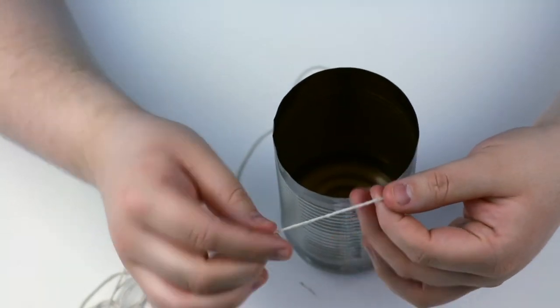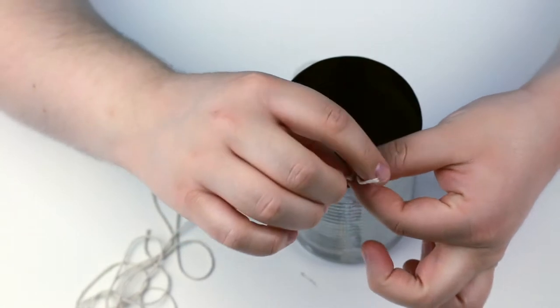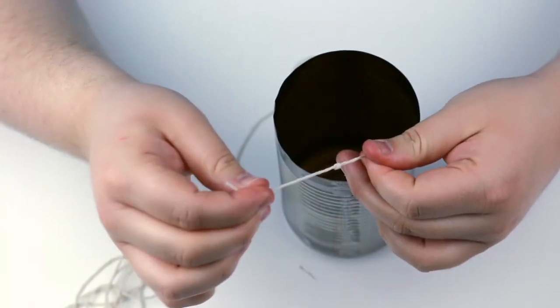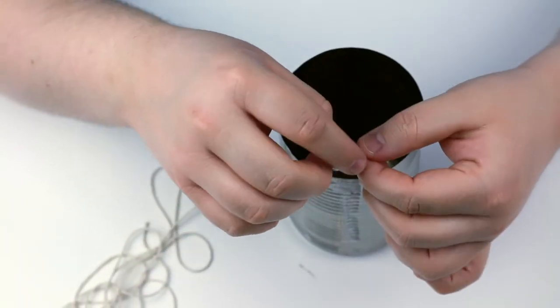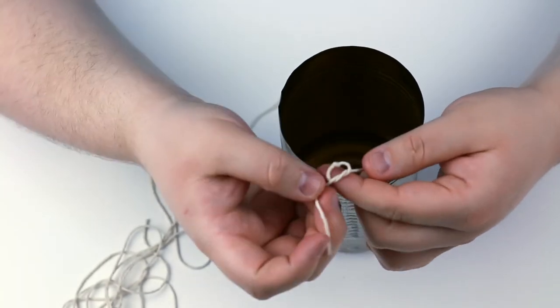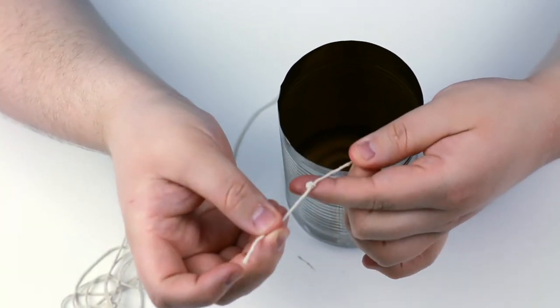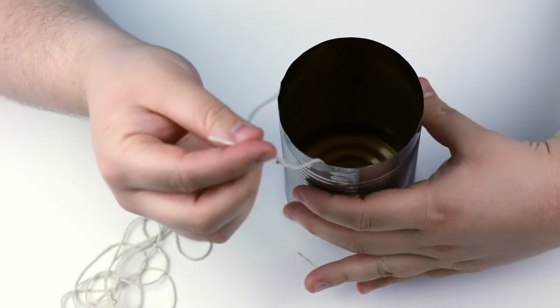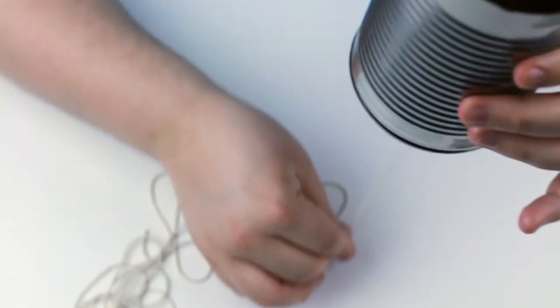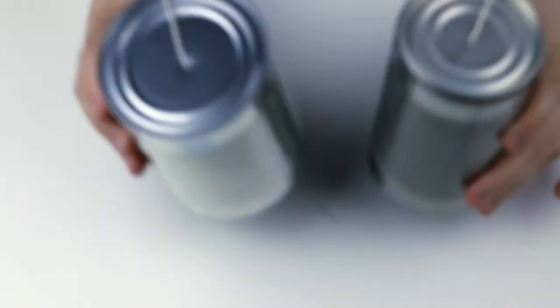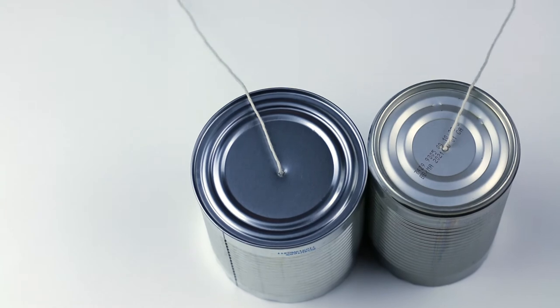And you're going to give your string a tie. How many times you tie your string is really going to depend on what type of string you use. For this project, for my can and my string size, I made two knots. Let's stick that back in there. Pull tight. There we go. It's secure. Do that to both sides of your can and voila! You have got a tin can phone.